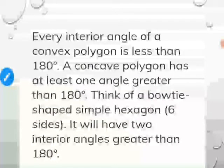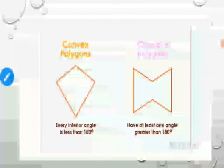The difference between convex and concave polygons: in a convex polygon all interior angles are less than 180 degrees, whereas in a concave polygon at least one angle is greater than 180 degrees (a reflex angle). In a convex polygon none of the angles are reflex, while in a concave polygon at least one angle is reflex.